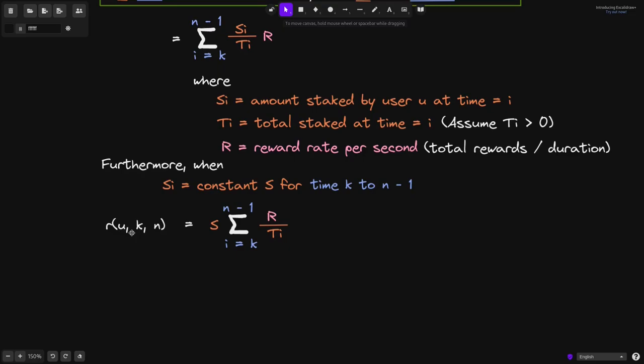The rewards earned by user u from times k to n will be equal to s, the constant that we pulled out from the right of this summation, and we get s times the summation from i equals k to n minus 1 multiplied by the reward rate R divided by the total staked at time equals i.